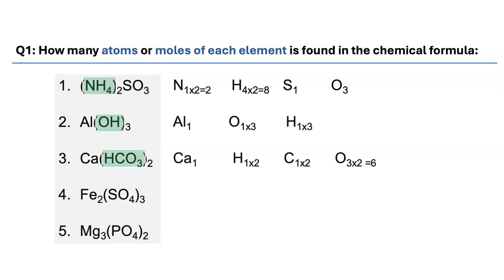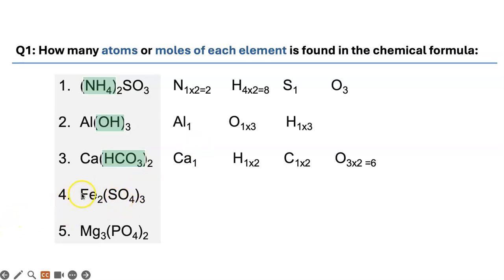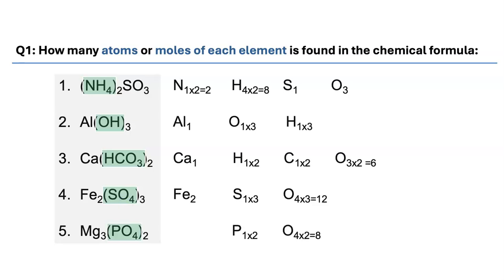For iron(III) sulfate — remember, iron is a D-block element, so you must state its oxidation state in the name. Everything inside the brackets is multiplied by three: three sulfurs, twelve oxygens, and two iron ions. For magnesium phosphate, everything inside the brackets is multiplied by two: two phosphorus, eight oxygens, and three magnesiums.